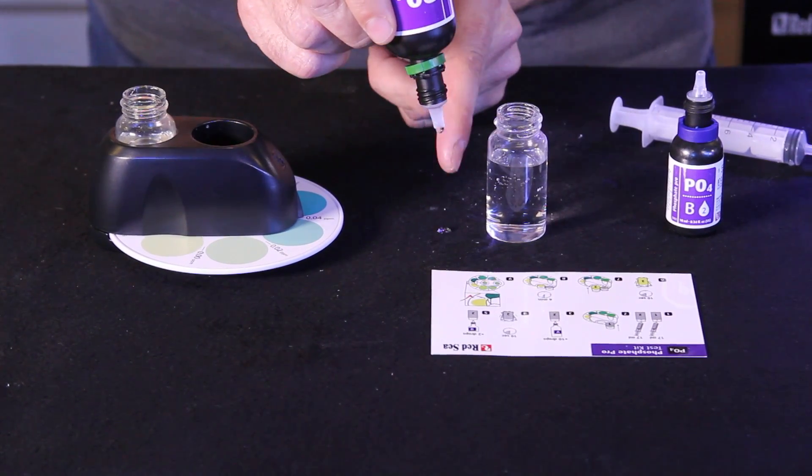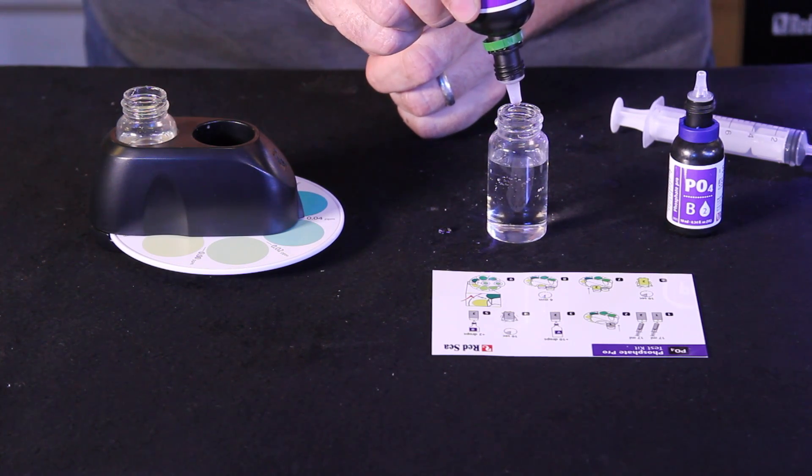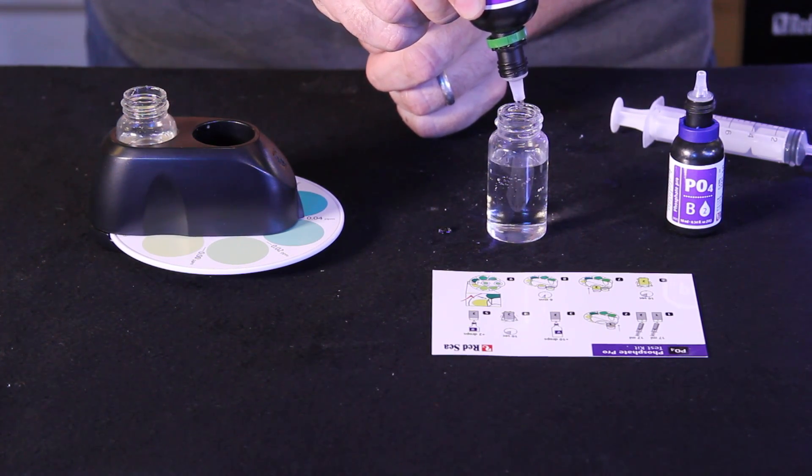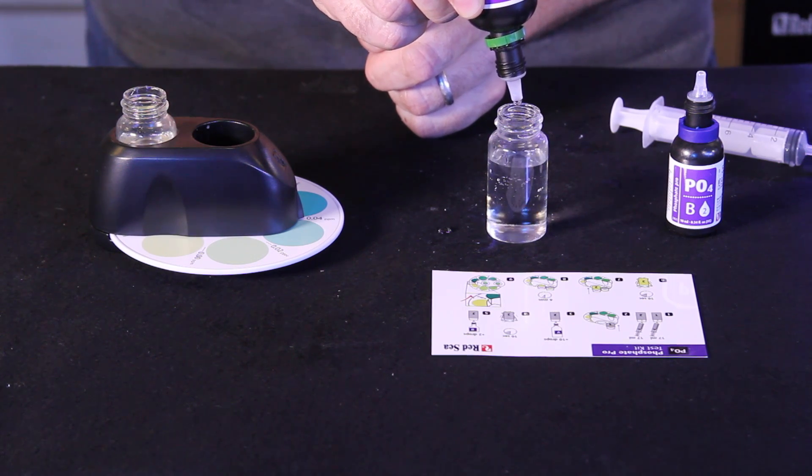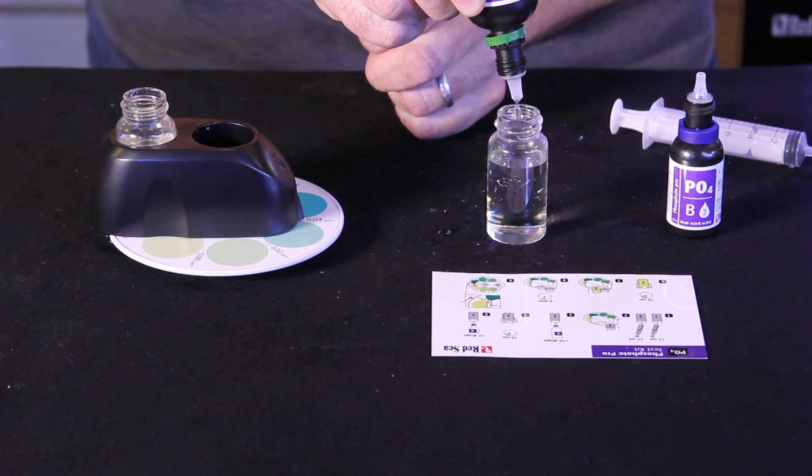We turn the bottle upside down so if a drop falls off it's going next to it and we'll do 10 even drops. One, two, three, four, five, six, seven, eight, nine, ten.